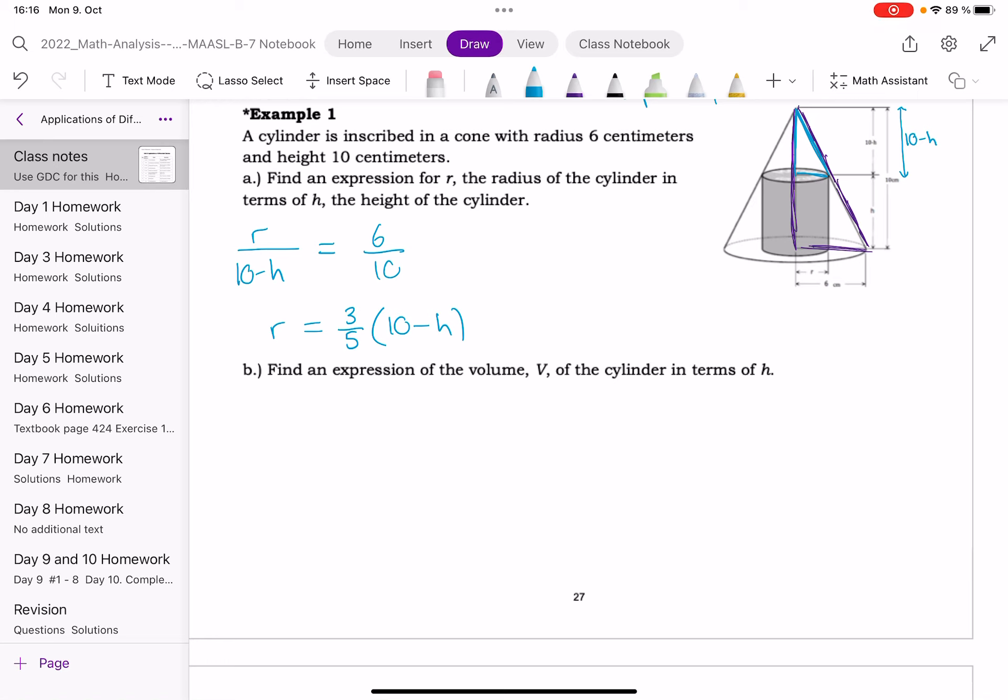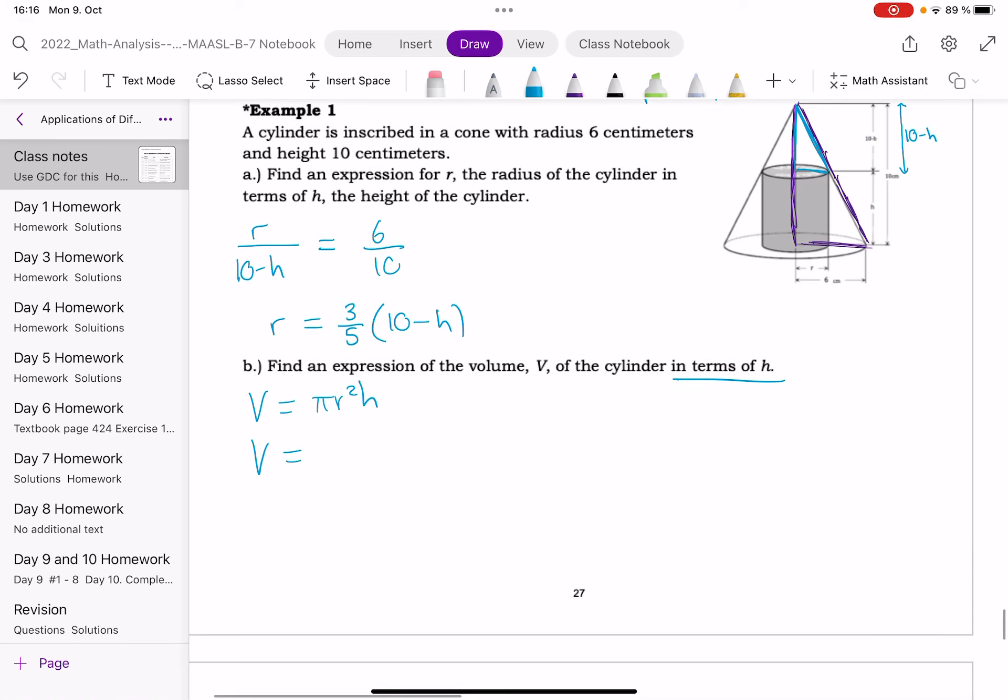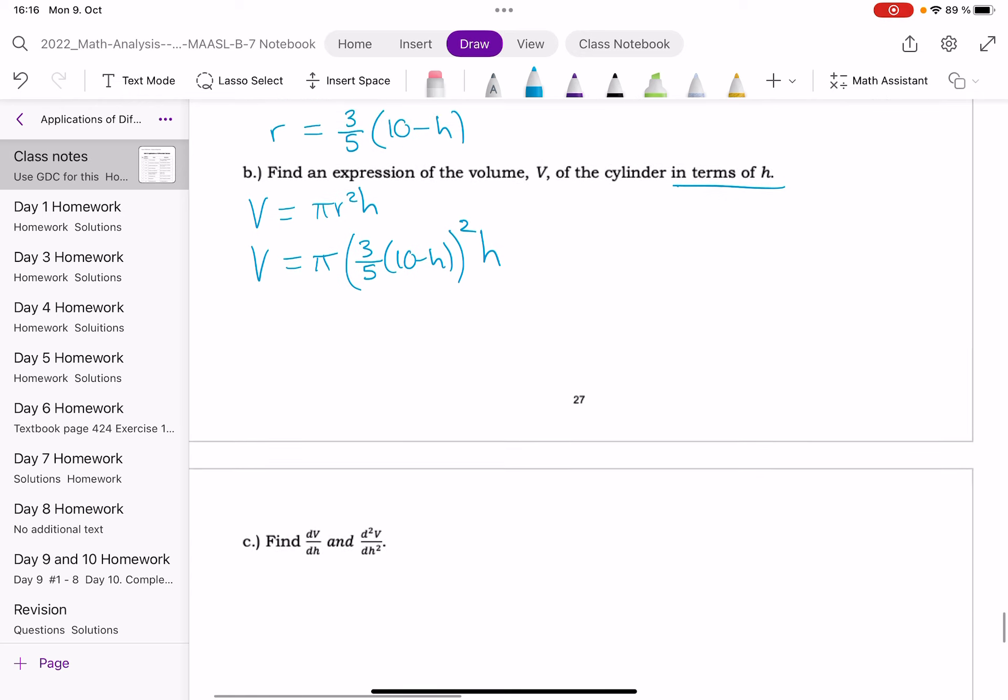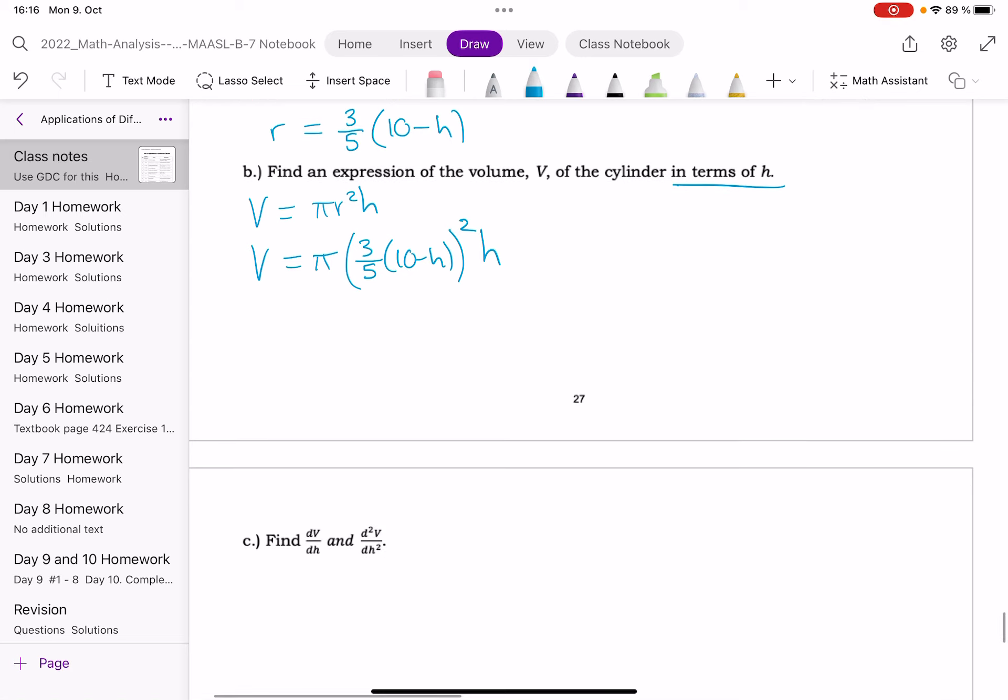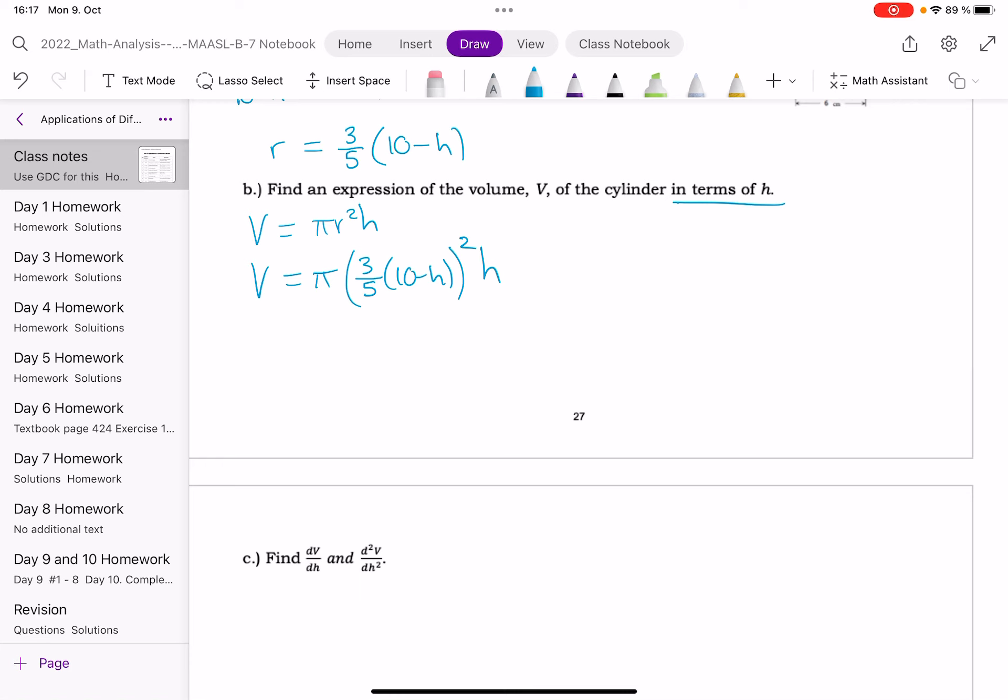Find an expression, this is part B, find an expression for the volume of the cylinder. So we know the volume of the cylinder is pi R squared H. It's in our formula guide. But you'll notice at the end of the question, it says in terms of H. That means H is the only variable we're allowed on that side of the formula. So I'm going to have to replace R with 3 fifths, 10 minus H. And that is all squared because it's pi R squared H. This is a non-calculator question. So while I have answered part B, I am just looking ahead at part C. I know I'm going to have to tidy this up because it's a bit of a mess at the moment.